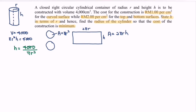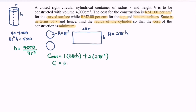For the second part, we build the cost function. The cost for the curved surface is RM1 × 2πrh, and the cost for the top and bottom is RM2 × 2πr². Simplifying, the total cost is C = 2πrh + 4πr².